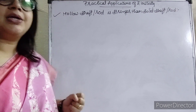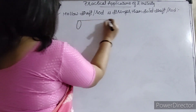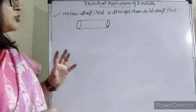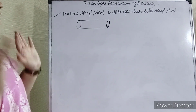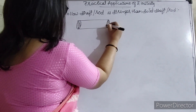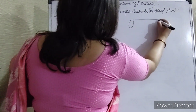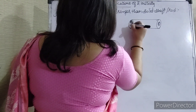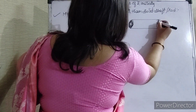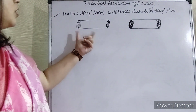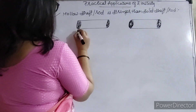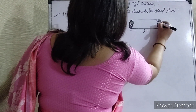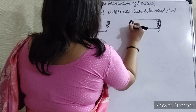Suppose you have made two rods of the same material and same length. One rod is solid — it is a full iron rod, completely filled with the material. The other is a hollow rod, meaning the center portion is empty. This is the solid rod and this is the hollow rod made of the same material, same length.